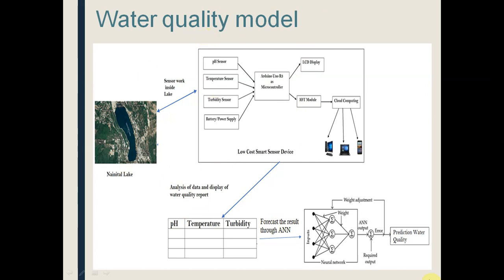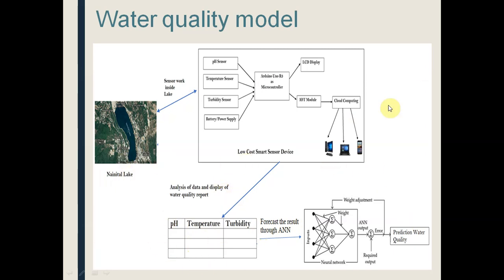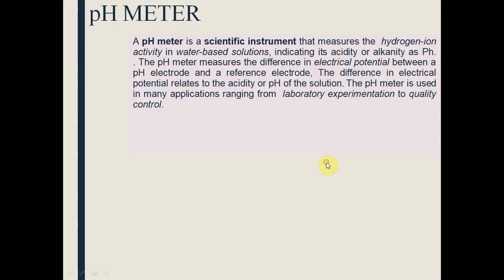After collecting this data, we will apply an artificial neural network to forecast the water quality over a whole year, classify the water, and forecast quality every season. Without going to the river or lake, we are directly connecting and getting data on our mobile every minute or every hour. ThingSpeak is the IoT framework through which we are collecting the data.